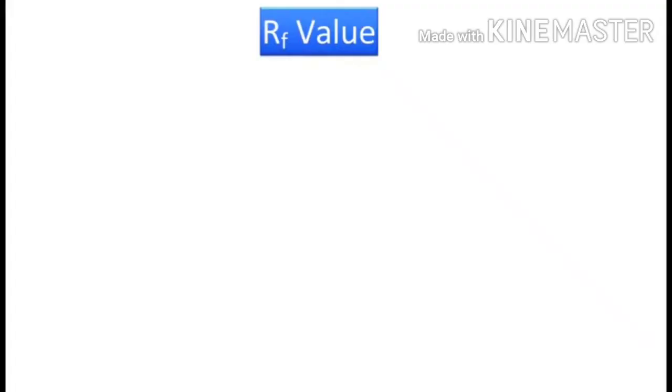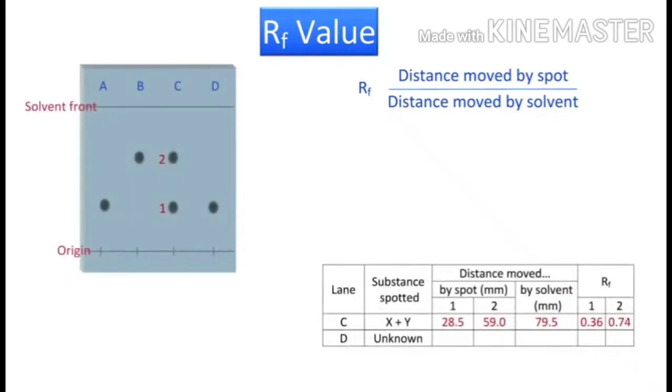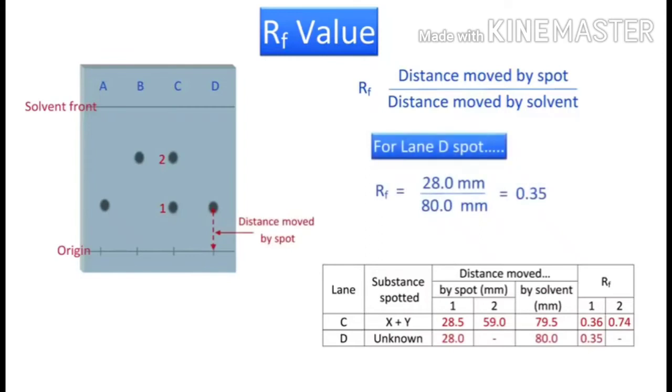The RF value for any spot is equal to the distance moved by that spot in millimetres, divided by the distance moved by the solvent, also in millimetres. Now using this developed plate as an example, and assuming that RF values for the spots 1 and 2 in lane C have already been determined, let's now obtain the RF for the single spot in lane D. The distance moved by the spot from the origin to its centre is 28.0 millimetres, and the distance moved by the solvent from the origin through the spot to the solvent front is 80.0 millimetres. The RF for this spot is thus calculated to be 0.35. Note that it is customary to report RF values to two decimal places.